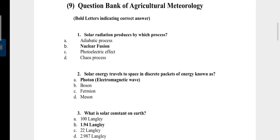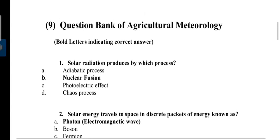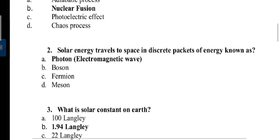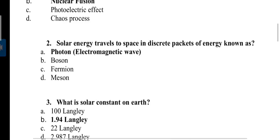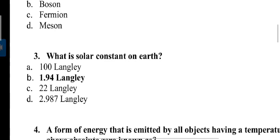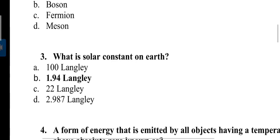First question: Solar radiation produces by which process? Nuclear fusion. Nuclear fusion is a process in which four hydrogen nuclei combine and form one helium atom and energy is released in the form of light. Second, solar energy travels to space in discrete packets of energy known as photon. Photons or electromagnetic waves have no charge and zero absolute mass. Third, what is solar constant on earth? Value of solar constant is 1.94 Langley, where Langley is a unit of heat transmission especially used to express the rate of solar radiation.